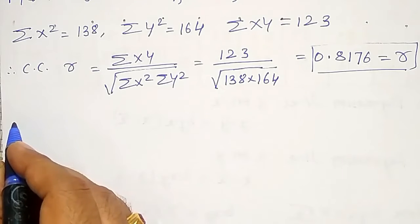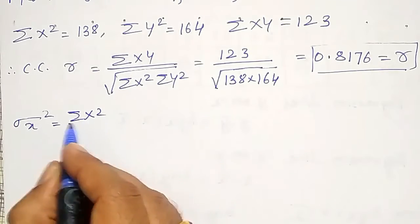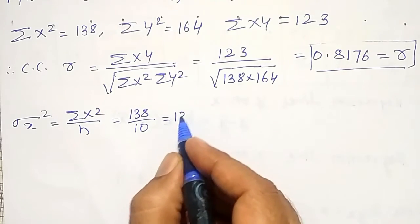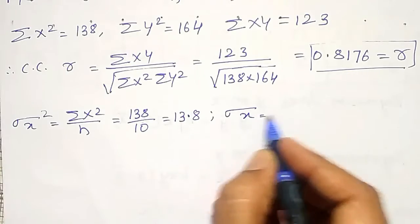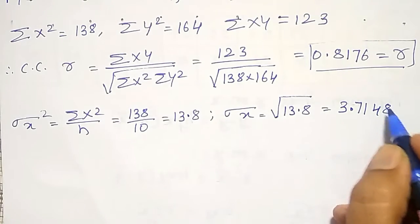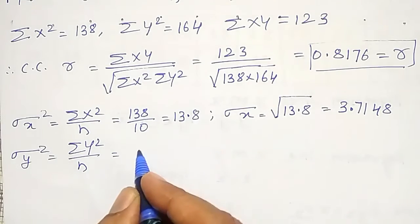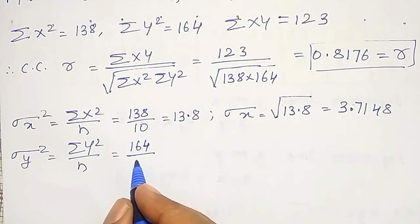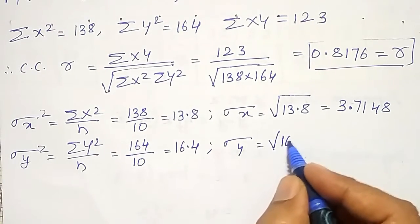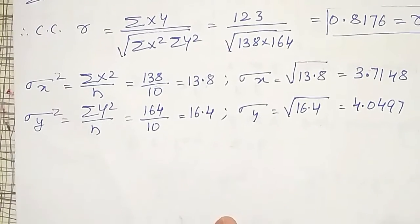Next, I want to find the standard deviations. Sigma X-square equals summation of capital X-square divided by N, that is 138 divided by 10, equal to 13.8. Therefore sigma X equals square root of 13.8, which is 3.7148. Similarly, sigma Y-square equals 164 divided by 10, that is 16.4. Therefore sigma Y equals square root of 16.4, which is 4.0497.